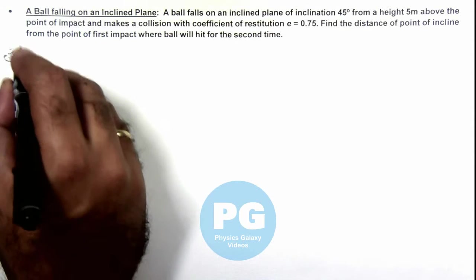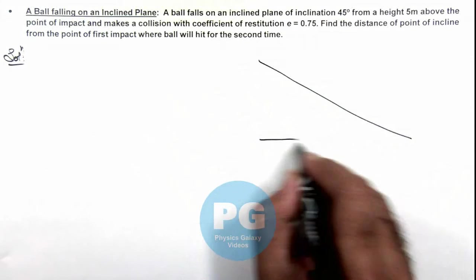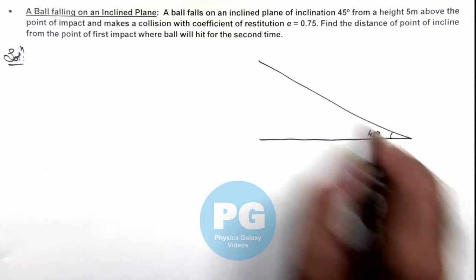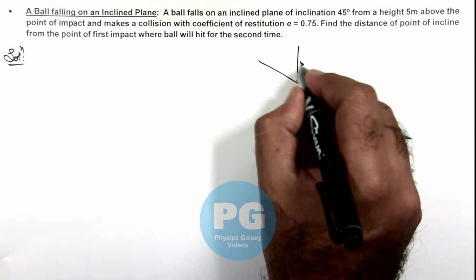We can analyze the situation by drawing the figure. Here this angle is 45 degrees, and a ball falls on it from a height of 5 meters.